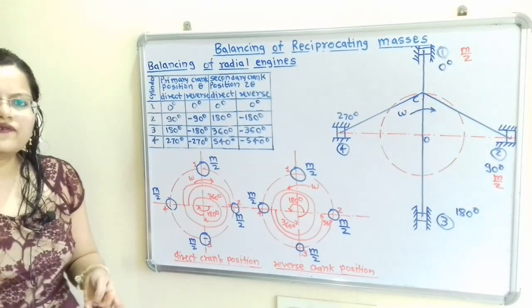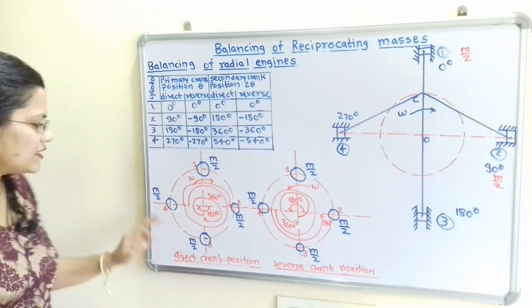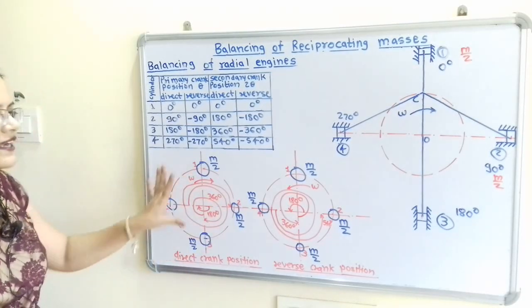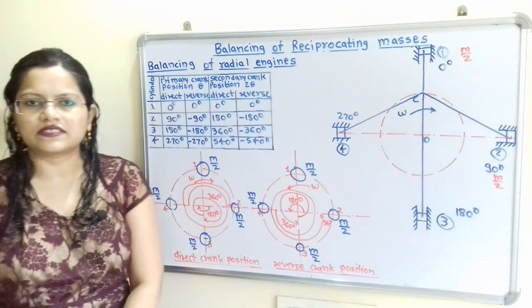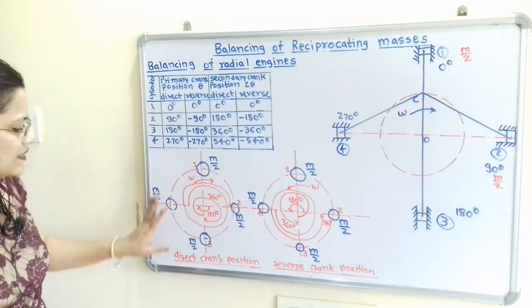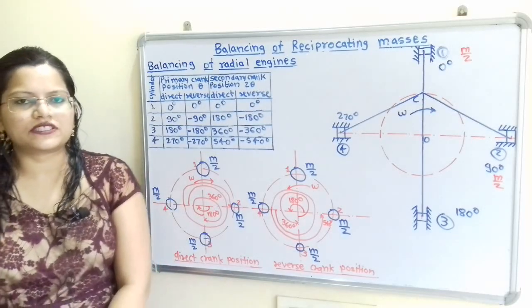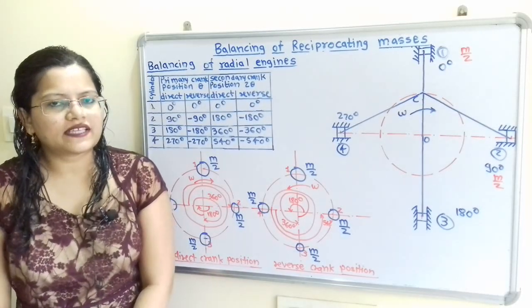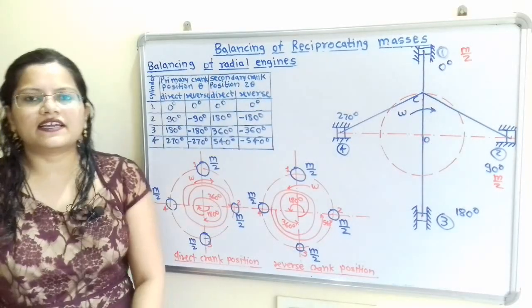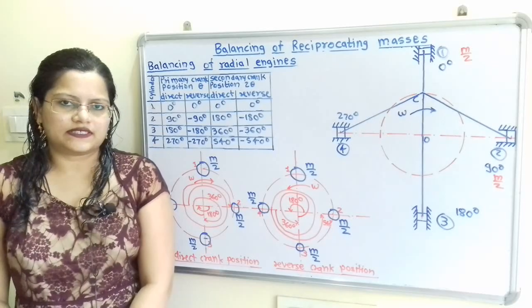Observing the two secondary force diagrams: all cylinders are placed at equal distances apart and opposite to each other. Both the Direct Crank and Reverse Crank positions are balanced. Therefore, for 4-cylinder radial engines, the secondary forces are balanced.